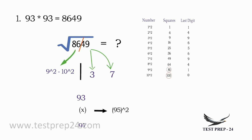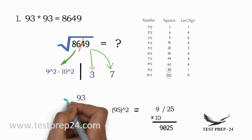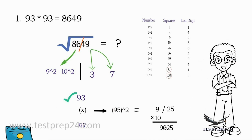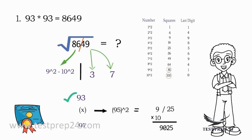95 squared — any number ending with 5 can be calculated directly. 5 square gives 25 as the last two digits, and 9 multiplied by the immediate next number 10 gives 90. So 95 square is 9025. The given number 8649 is less than 9025, so the answer is 93. Explaining it, it sounds tough, but when doing the process it is actually very easy.